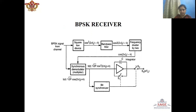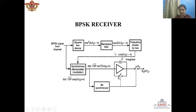After the BPSK modulated signal is transmitted, it will be received at the BPSK receiver. The detection method for BPSK signal is known as synchronous demodulation. In synchronous demodulation, the synchronized carrier is generated at the receiver end and the incoming modulated signal is multiplied by this synchronized carrier. To generate this synchronized carrier, a carrier recovery circuit is used, which consists of three blocks: a squaring device, a bandpass filter, and a frequency divider.